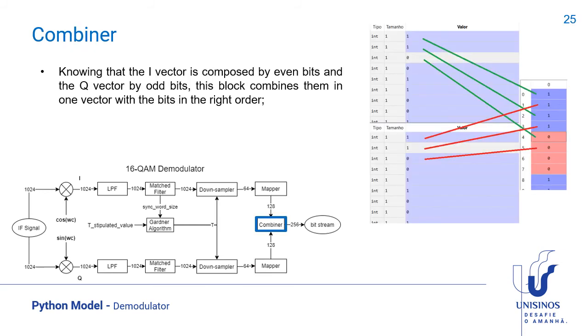The combiner block just puts all the bits in order. It knows that the in-phase vector is composed by the even bits and the quadrature vector by the odd bits, so it combines them in just one vector.